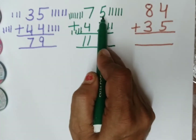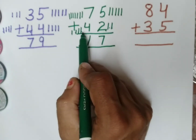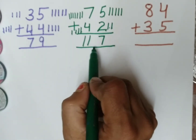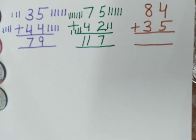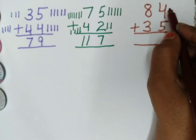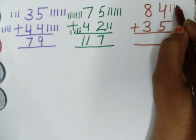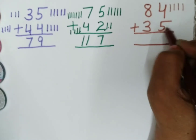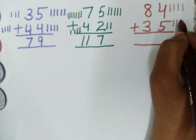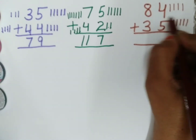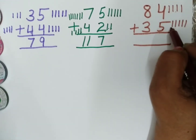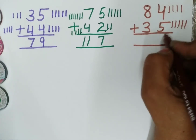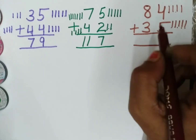So when we add 75 and 42, the answer we get is 117. Now next sum. In the next sum we will count the 1s place. 1, 2, 3, 4. And this is 5: 1, 2, 3, 4, 5. Now count them together: 1, 2, 3, 4, 5, 6, 7, 8 and 9. The answer is 9.